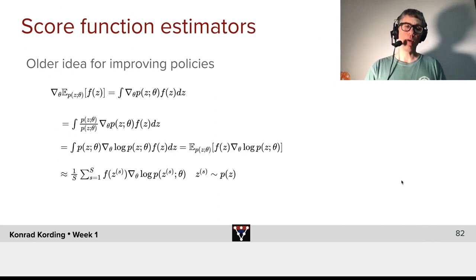We can then rewrite this as the integral of p(z|theta), NABLA theta, log p(z|theta), f(z), dz. If you look at this, it's clear this is an expected value. This is the expected value under the relevant probability distribution of f(z). And then we have the gradient of the log probability here, NABLA theta, log p(z|theta).